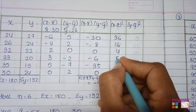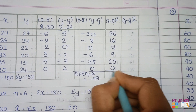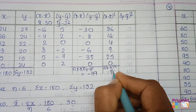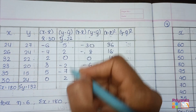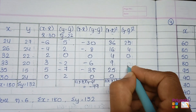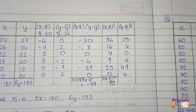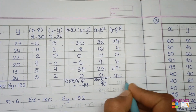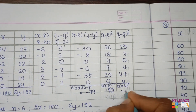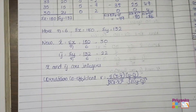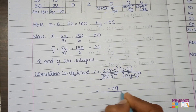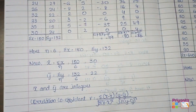For (x − x̄)²: 6² = 36, 4² = 16, 2² = 4, 3² = 9, 5² = 25, 0 — total Σ(x − x̄)² = 90. For (y − ȳ)²: 5² = 25, 2² = 4, 2² = 4, 7² = 49, 2² = 4 — total Σ(y − ȳ)² = 86.